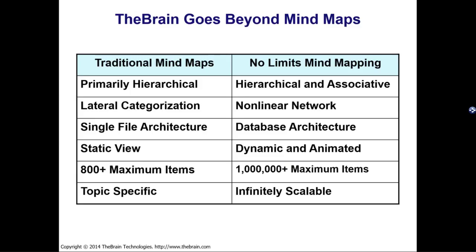That's where TheBrain comes in. We're talking about no limits mind mapping — going a little bit beyond what you'd consider a traditional mind map. With a traditional mind map, it's primarily hierarchical. With TheBrain, we allow for both hierarchical and associative connections, leading to a nonlinear network. We're thinking of TheBrain more in terms of an information network rather than a lateral categorization.